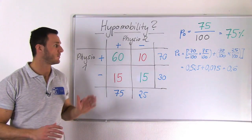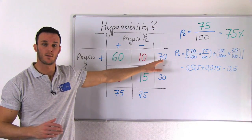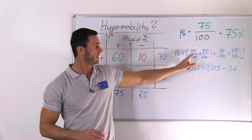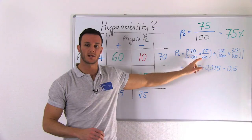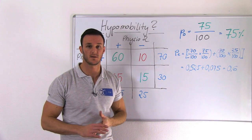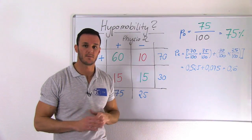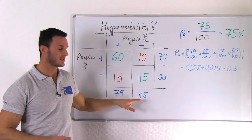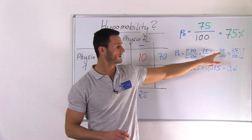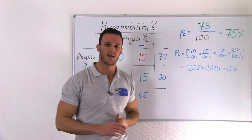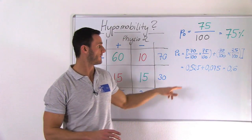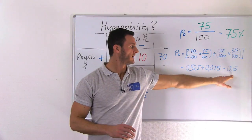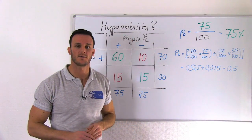What you do is multiply the positive answers of Physio 1 with the positive answers of Physio 2. So you have 70/100 and 75/100, and you multiply those two values with each other, and you add them to the negative answers of Physio 1 — 30 — and the negative answers of Physio 2 — 25 — which are also divided by 100 and multiplied with each other. You end up with 0.525 plus 0.075, so you have an expected agreement of 0.6.